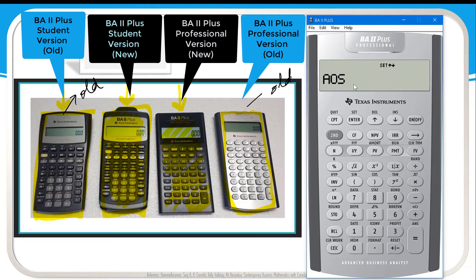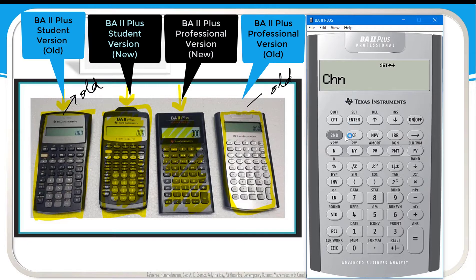Click the up arrow and it shows AOS — this is algebraic mode, which follows the BEDMAS rule. There is one more mode: click Second and Enter to see CHN mode, which is chain mode and does not follow BEDMAS rules. To solve this complex fraction you must make sure your calculator is set to AOS mode so it follows the order of operations. Click Second, then Enter, and it shows AOS.